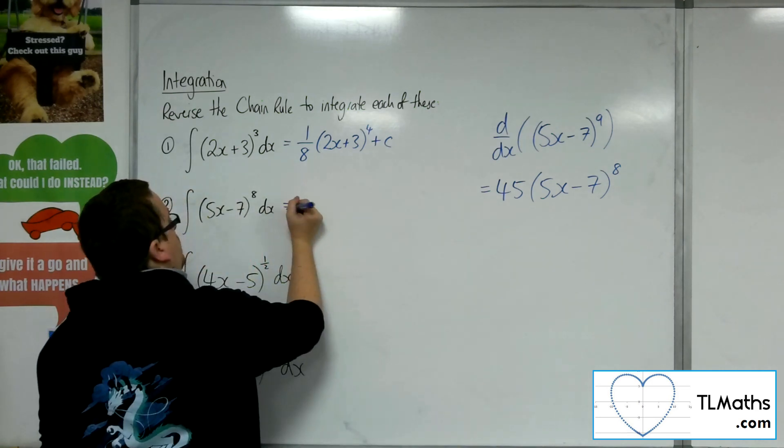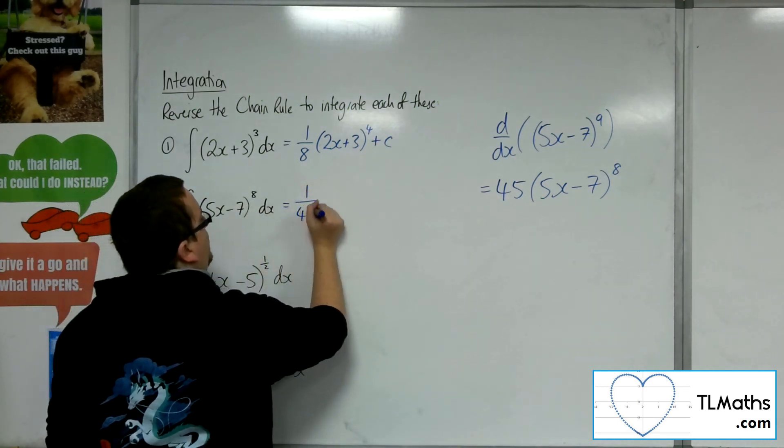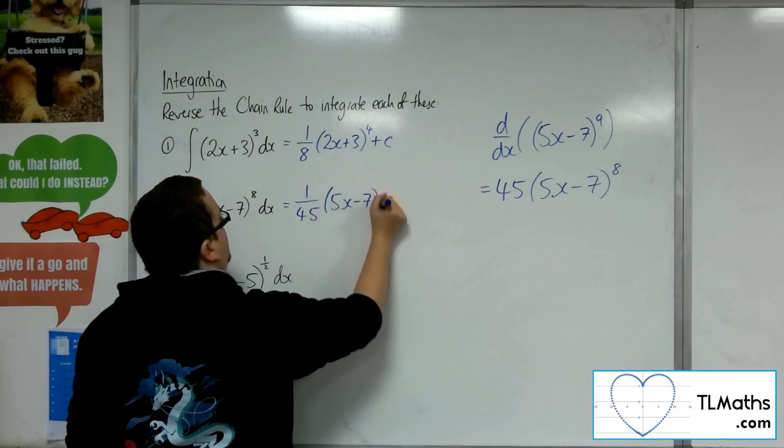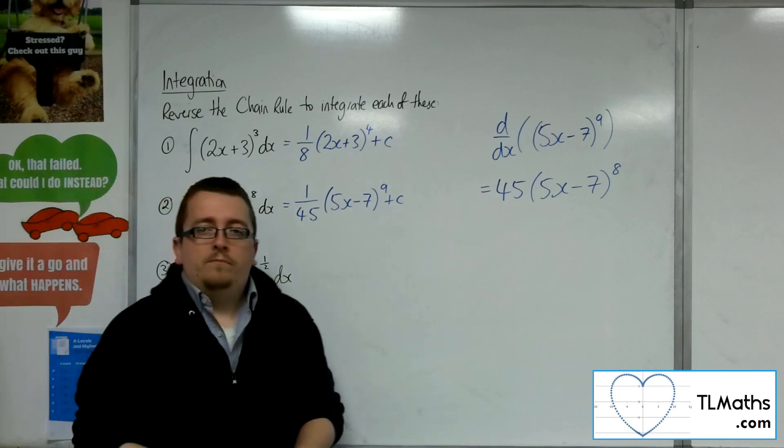So I know that the integral of 5x minus 7 to the 8 should be 1 over 45, 5x minus 7 to the 9. So that's number 2.